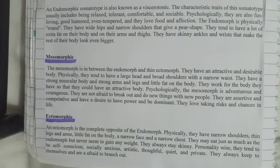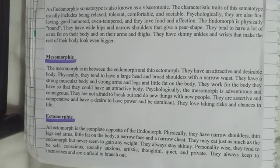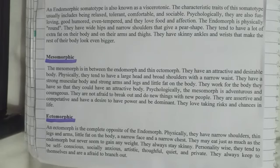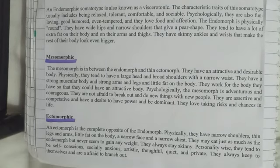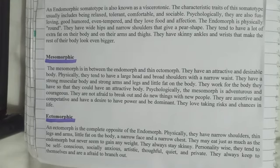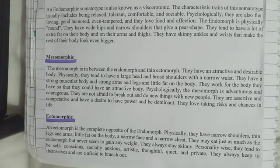Mesomorphic is in between the endomorph and the thin ectomorph. They have an attractive and desirable body. Physically, they tend to have a large head and broad shoulders with a narrow waist. They have a strong muscular body, strong arms and legs, and little fat on the body. Psychologically, the mesomorph is adventurous and courageous. They are not afraid to try new things with new people. They are assertive and competitive, have a desire for power and dominance, and love taking risks and changes in life.